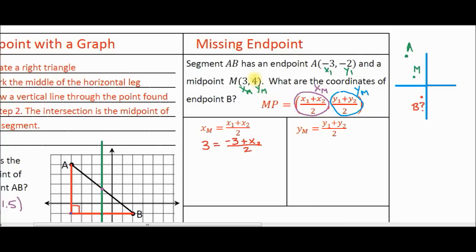We know that y sub m is equal to 4. We know that y sub 1 is equal to negative 2. What we don't know is y sub 2, and we know this whole thing has to be divided by 2. That's what our midpoint formula tells us.